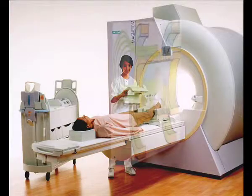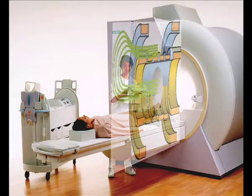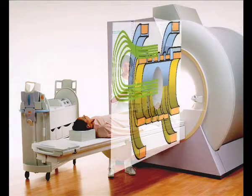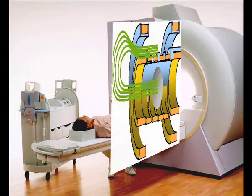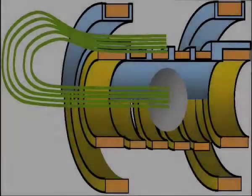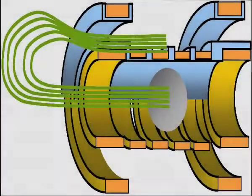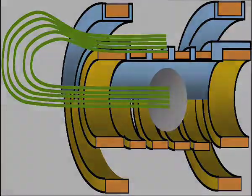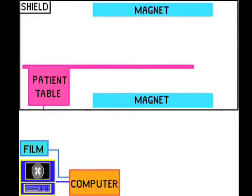In the heart of the system is a large superconducting magnet. Inside the main superconducting coil there are also gradient coils and RF coils, which are usually not superconducting.